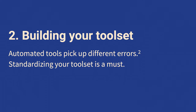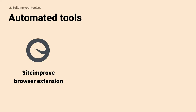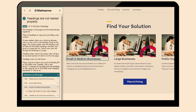Now let's talk about building your toolkit. Automated tools pick up different errors, so standardizing your toolset is an absolute must. Nobody paid me to talk about any of these — these are just the ones I personally use. The first is the SiteImprove Accessibility browser extension. When you click the extension button, a sidebar pops up that separates issues even by responsibility — is this a content creator issue or a developer issue? The way it categorizes issues is very useful.